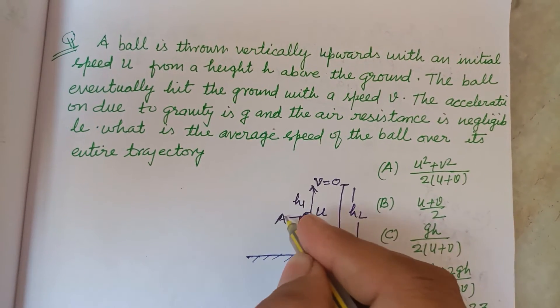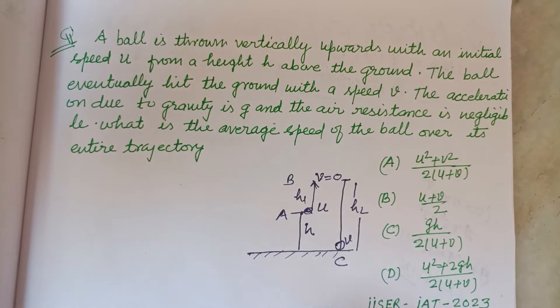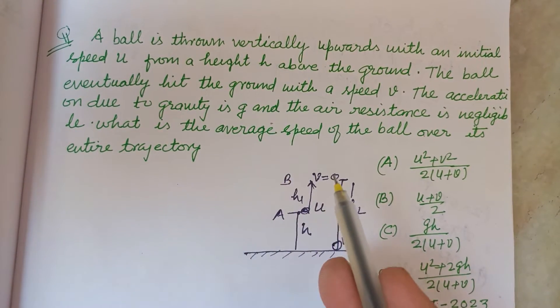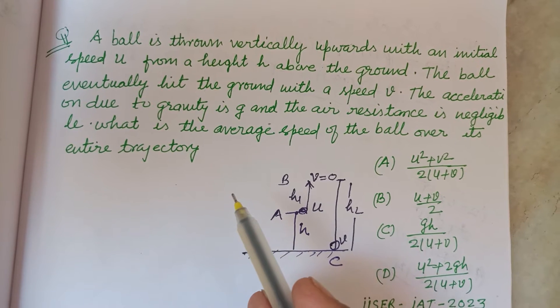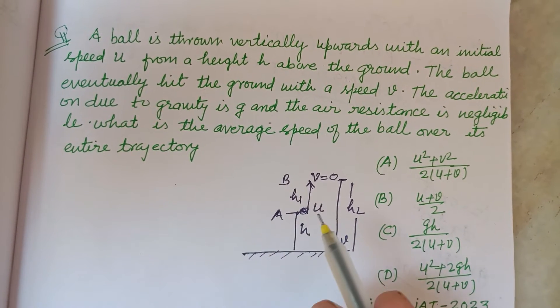From here, this is point A, this is point B, and this is point C. The acceleration due to gravity is g and the air resistance is negligible. What is the average speed of the ball over its entire trajectory?